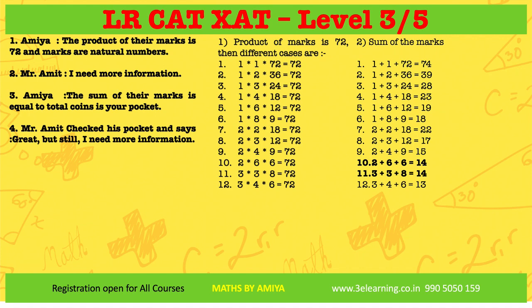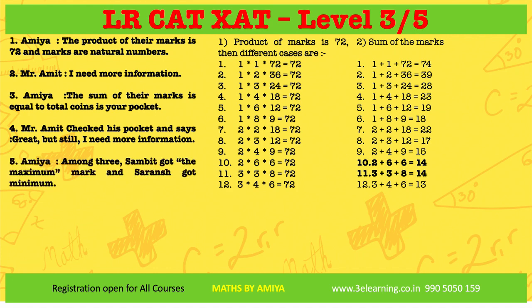LRDI is a flow of information — you follow the flow and solve. Amit checked his pocket and found 14 coins. Sum 14 has two combinations, so he is confused. Then Amie gave one more piece of information: among the three, someone got the maximum marks, and Saran got the minimum. The maximum here is a unique single value — let's look at the two combinations with sum 14.